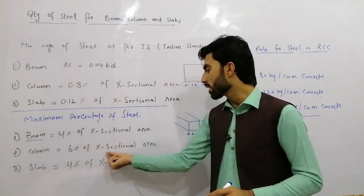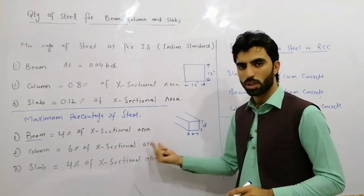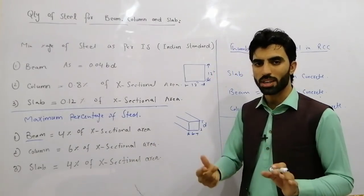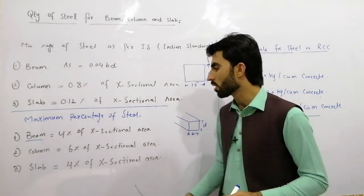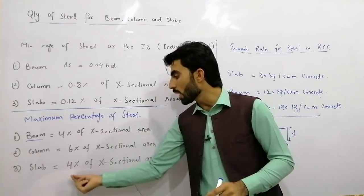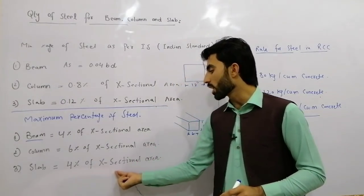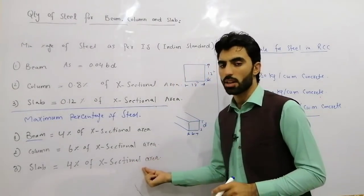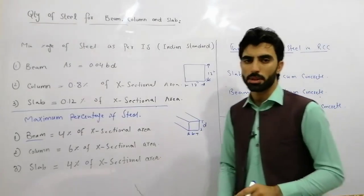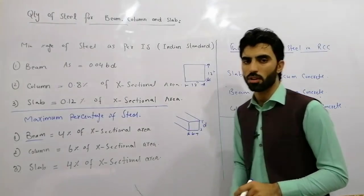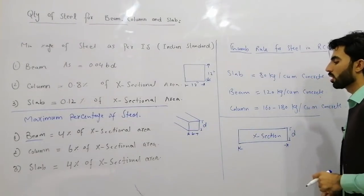For a column, the maximum percentage of steel is 6% of the cross-sectional area. For a slab, take 4% of the cross-sectional area. These are the maximum percentages of steel for different RCC structures.